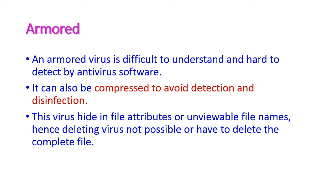The next one is the armored virus. This virus is very difficult to understand and hard to detect by antivirus software. It can also be compressed to avoid detection and disinfection, because the virus hides between file attributes and unviewable file names. It is very hard to detect, and deleting the virus alone is not possible — we may have to delete the complete file.